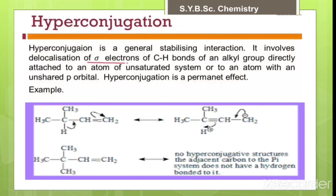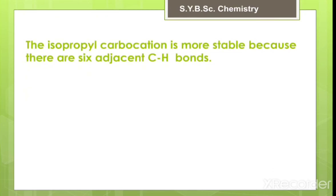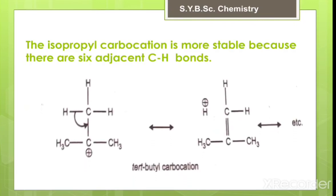The charge is delocalized over a greater volume of space. We must remember that more the number of adjacent C-H bonds, more is the stability of the carbocation due to hyperconjugation. The tertiary butyl carbocation is most stable because it has nine adjacent C-H bonds. Isopropyl carbocation has six adjacent C-H bonds, ethyl cation has three, and methyl carbocation has no adjacent C-H bonds and is therefore least stable.